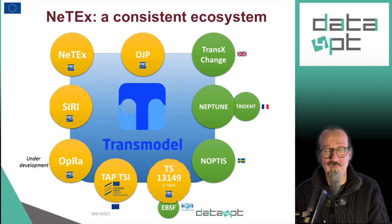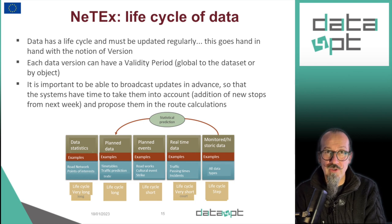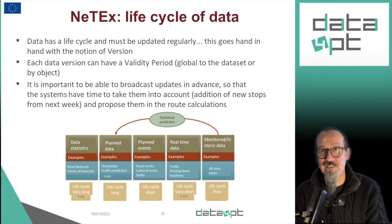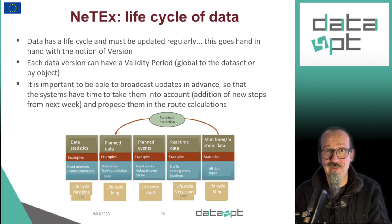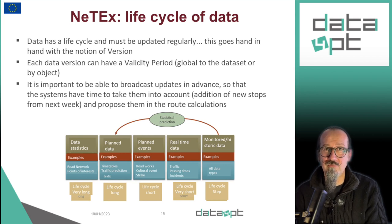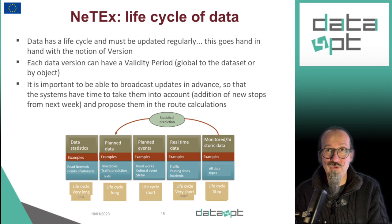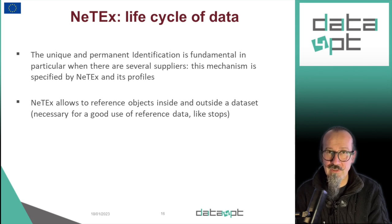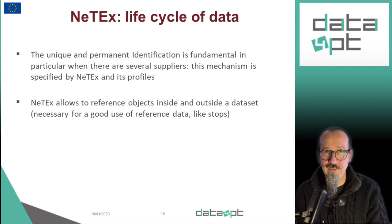Being a little more technical, it is important to keep in mind that NETEX is providing the initial information and all the following updates, meaning that it must manage the life cycle of the data. Therefore, every single piece of information can have a version and a validity period. This is very important when you want to provide information in advance, so the system can have sufficient time to manage it, or also when a user wants to make requests about the future or check how the information was in the past. In order to properly manage the data lifecycle, it is mandatory for every single piece of data to have a unique and stable identifier.